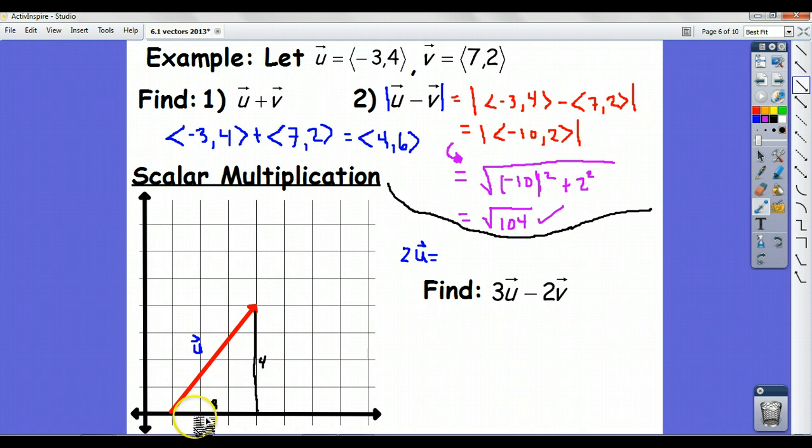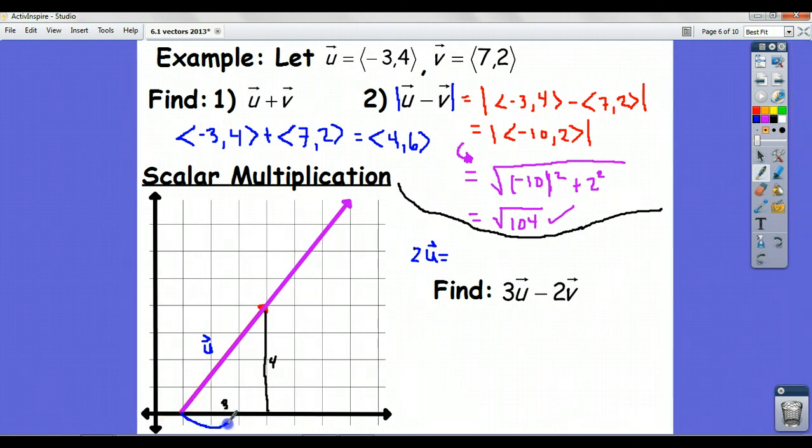So, let's try that again. So, it moves u, 6 to the right, and 8 up, which is here. So, this distance is now 6, and it moves me 8 up. So, this big vector here, in purple, is 2u.